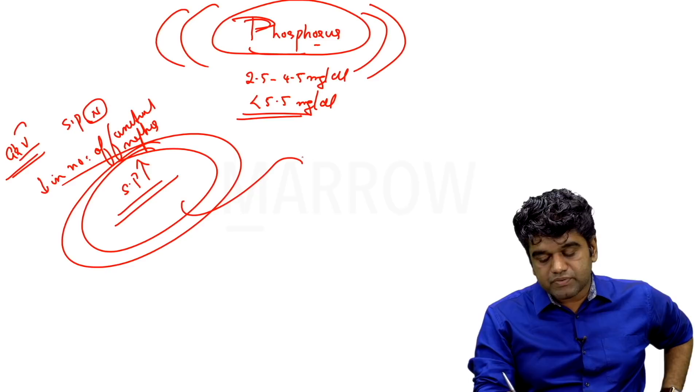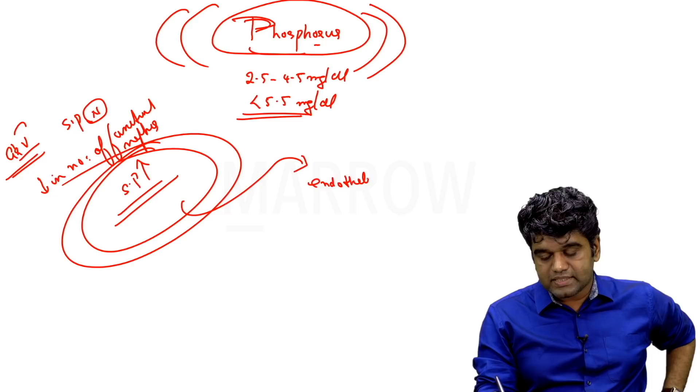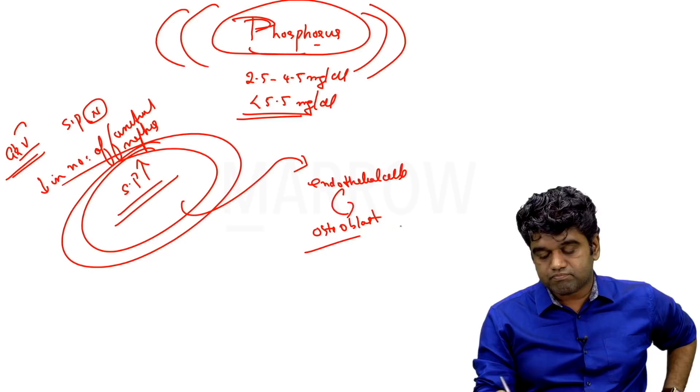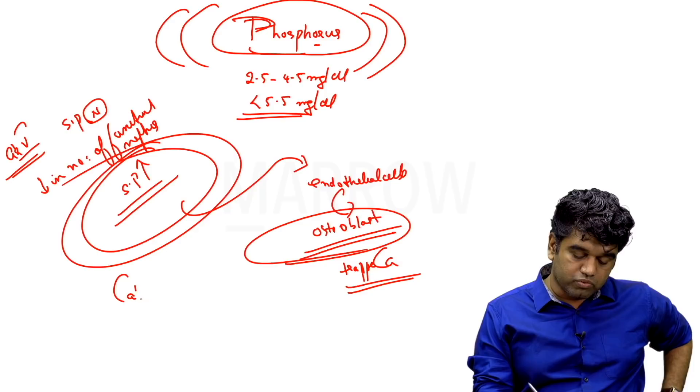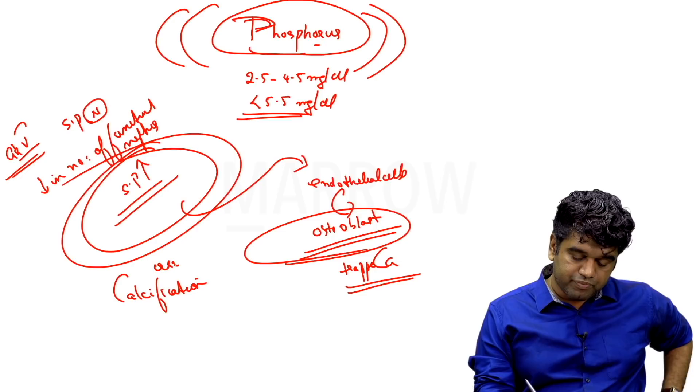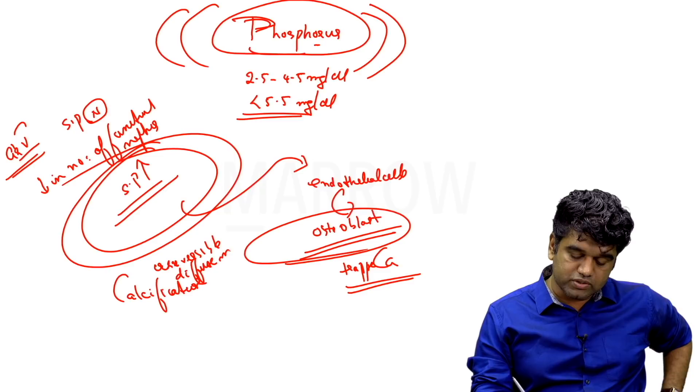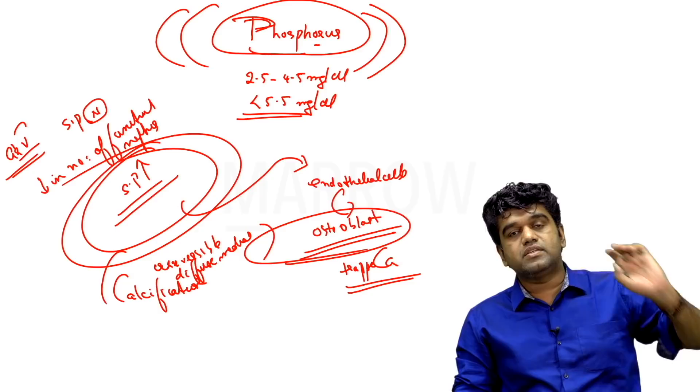We are always worried about hyperphosphatemia. Why is hyperphosphatemia such a major issue? Because it is hyperphosphatemia that can actually convert vascular endothelial cells into osteoblasts. This is very critical. When vascular endothelial cells are converted into osteoblasts, they will trap calcium. This leads to calcification - irreversible diffuse medial calcification. It is unlike the intimal calcification which you get in atherosclerotic patients which is patchy.